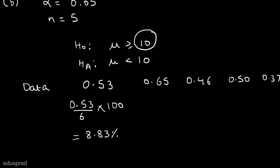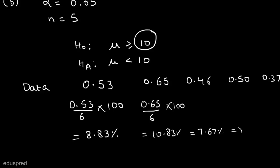Similarly, we can convert the remaining values. 0.65 ÷ 6 × 100 = 10.83%. In the next case we get 7.67%, then 8.33%, and in the last case 6.17%. So now we have converted all the data into percentage terms, and we can use this data to calculate the sample mean and sample standard deviation, which we need to test the hypothesis.